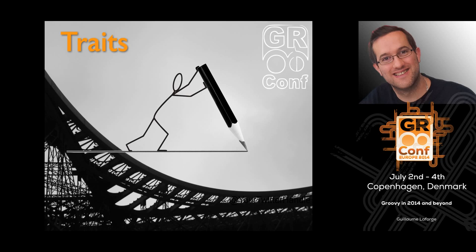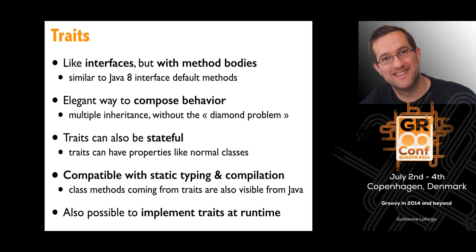Next, traits — that's one of the key features of Groovy 2.3. Traits are a bit like interfaces but with method bodies. In Java 8, they introduced default methods in interfaces, so it's a bit similar. It's an elegant way of composing behavior because you can define some behavior in a trait and add that to any class. Traits can be stateful, unlike Java 8 interface default methods, and compatible with static typing and compilation. You can also implement traits at runtime.